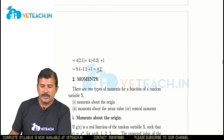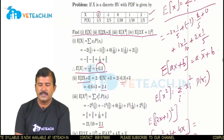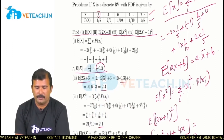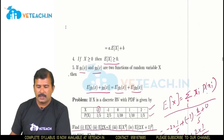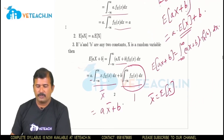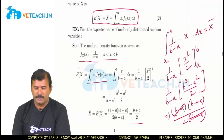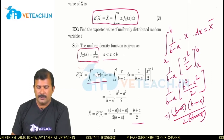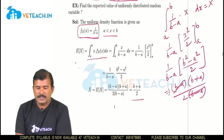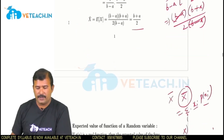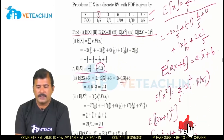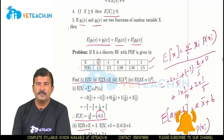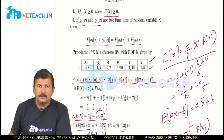So in this way, if the random variable and corresponding probabilities are given, we can find the average value, statistical average, expected value, or mean value. For a continuous random variable, the density function is used to evaluate the expected value. For a discrete random variable, the expression sigma x_i times P(x_i) is used to evaluate the expected value.